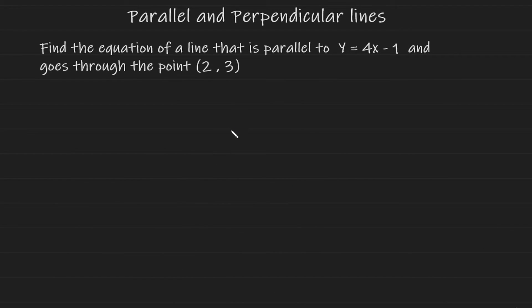Now we're going to look at some examples where we can apply this idea of parallel and perpendicular lines. Our next example is the following. Find the equation of a line that is parallel to y equals 4x minus 1, and goes through the point (2, 3). So they've told us that the equation of the line we are looking for is parallel to this line given by this equation here.